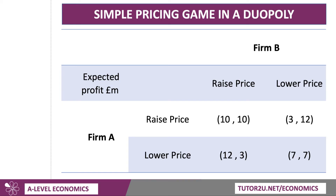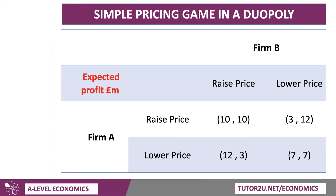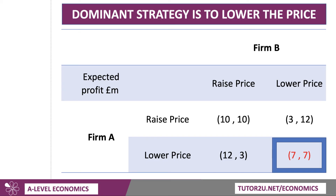It's quite important in the exam to put the label in the top left — that tells the examiner what the implication is. This is expected profits in millions of pounds. So what should firm A do? If firm A charges a low price, it will either get 12 million if firm B raises their price, or 7. Well, 12 is better than 10 and 7 is better than 3 — firm A is on the left. So a low price for firm A is, in fact, a dominant strategy. Because this is a symmetrical game, the same is true for firm B: their dominant strategy is also to charge a low price. So you'd probably end up with an equilibrium where both firms charge a low price and both make profits of 7 million.